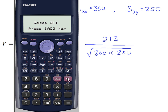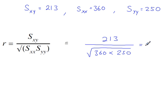Resetting the calculator. Fractions, 2113 over the square root of 360 times 250. That's the PMCC value for the summarized data values here.